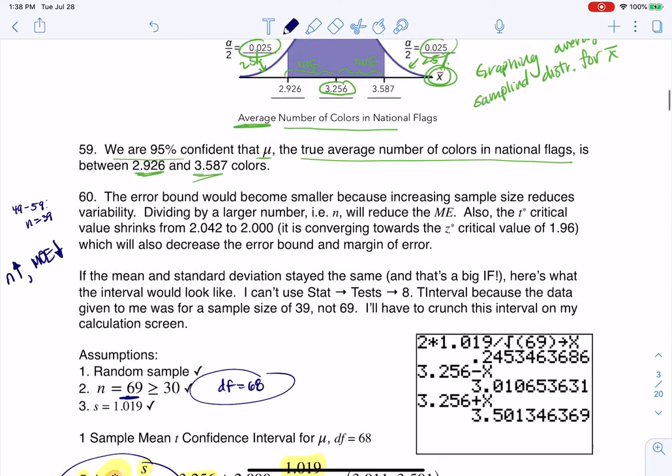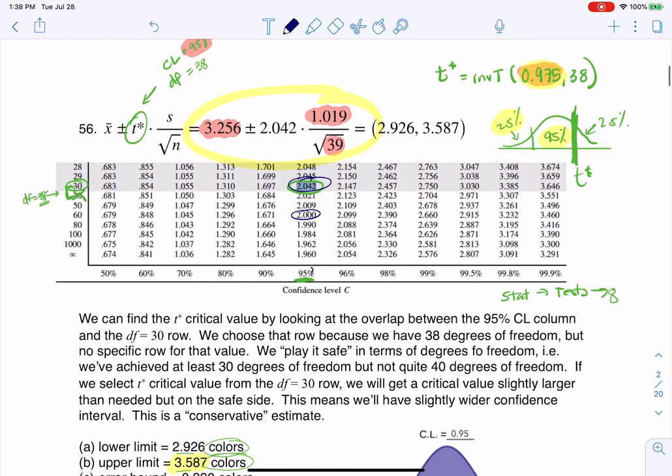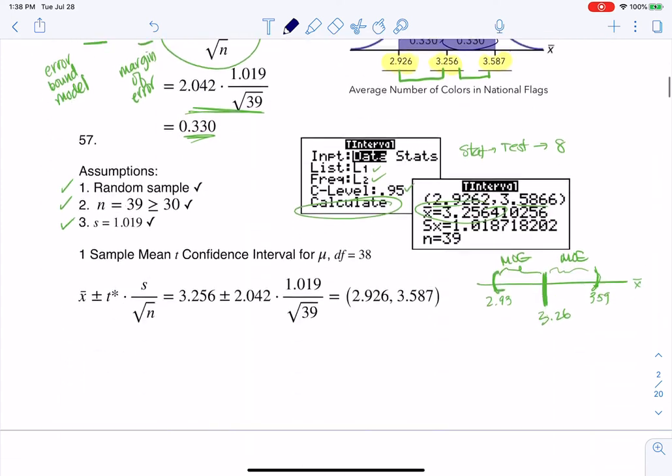And let me just scroll back and show you what we were looking at before. I've got to scroll way back. We stayed at 95% confidence. There we had 38 degrees of freedom. So we had to play it safe and go with 2.042, right? We had to go on that row of 30. And we had 2.042. So I'm going to scroll back again.